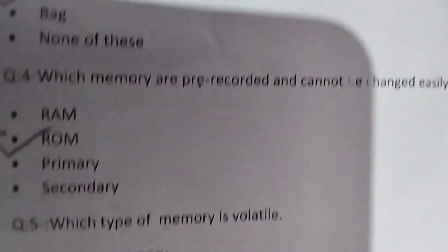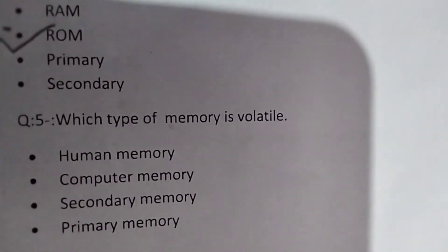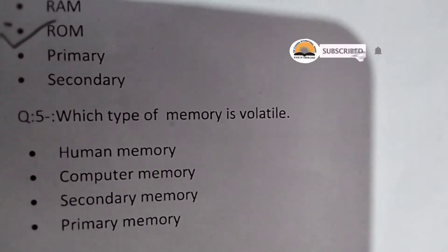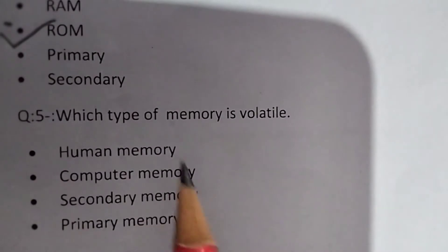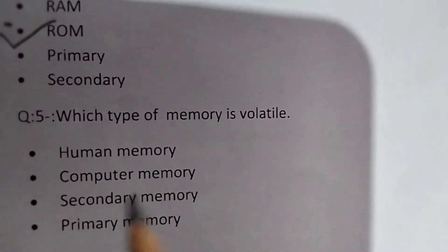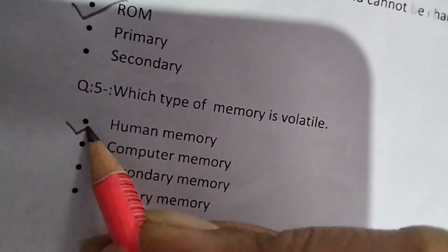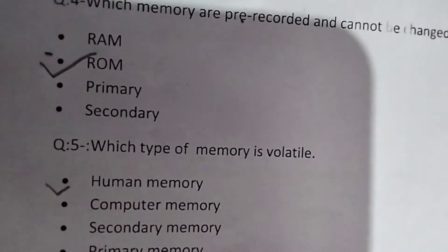Now the next question is: Which type of memory is volatile? Volatile means what is the pre-recorded memory, which memory is the change that comes from? Human memory, computer memory, secondary memory or primary memory. Which memory? Human memory is volatile.